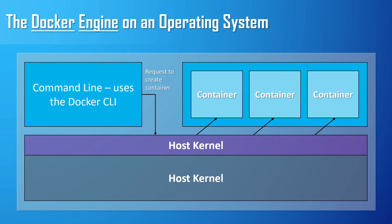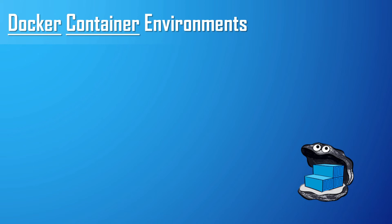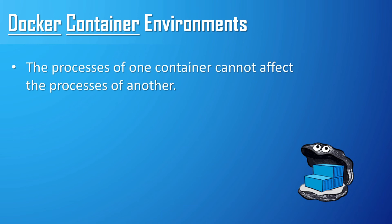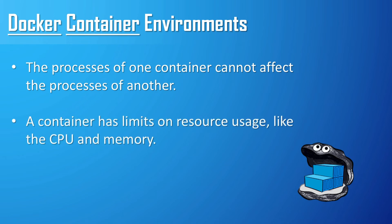Now that we have a grasp of the Docker engine, the kernel, and the host machine, let's think about how Docker container environments actually work. The Docker engine creates these environments called Docker containers on top of the kernel, where you can run application-specific code. The environment allows for a certain degree of loose isolation — for example, the processes running within one container should not be able to affect the processes of another. Also, a container environment allows for resource limitation. We can specify how much of the CPU each container is allowed to consume, and each container can have access to only a maximum amount of kernel memory. This allows us to make sure certain apps don't consume too much of the host machine's kernel resources, allowing all containers to run fairly.